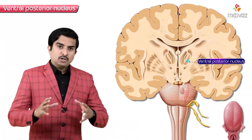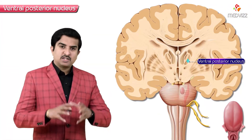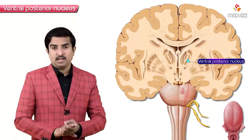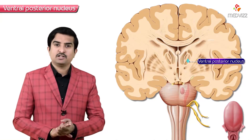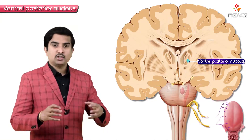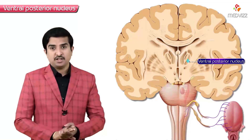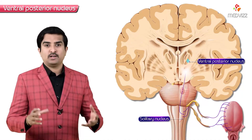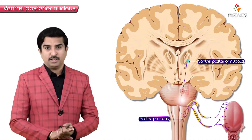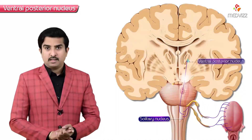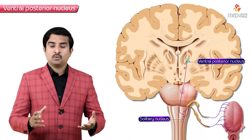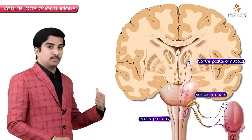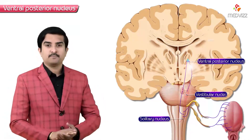The ventral posterior nuclear group also receives taste information from the nucleus solitarius of the medulla, and vestibular information from the vestibular nuclei.